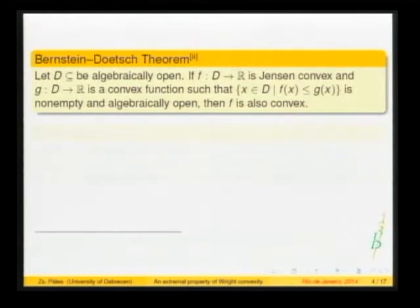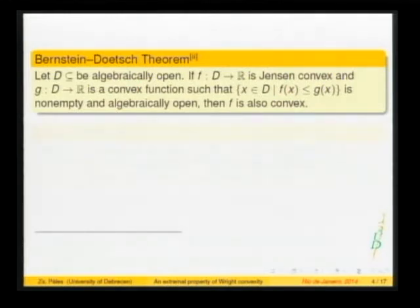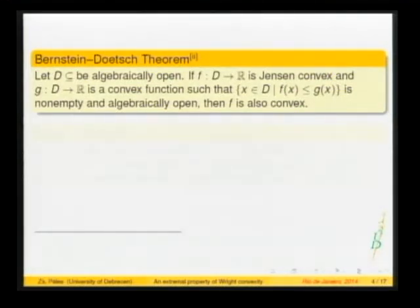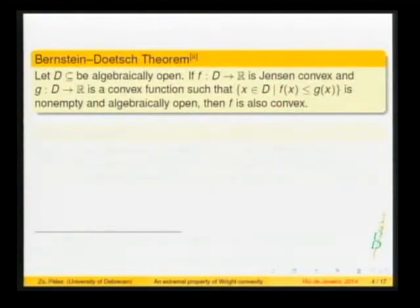Two other important theorems should be mentioned. The first is the Bernstein-Doetsch theorem, which assumes that D is algebraically open. A set in a vector space is called algebraically open if for every point of this set and any direction, moving from the point in that direction keeps you inside the set — more precisely, the segment connecting any other point with the chosen point has a portion of positive length inside D.